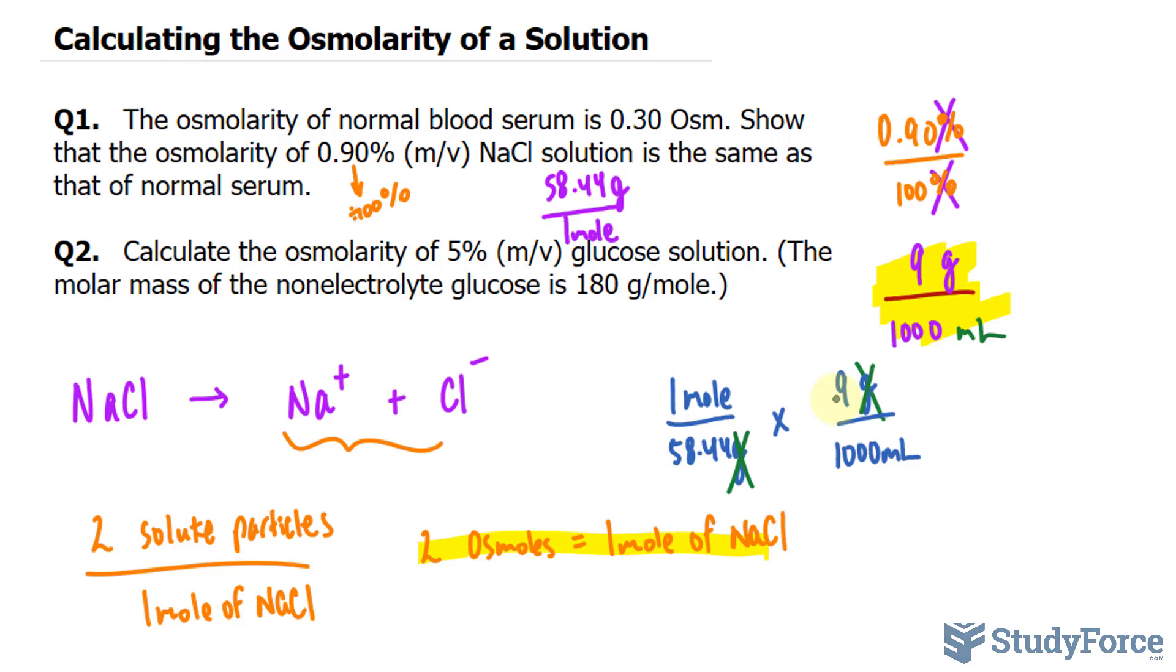Furthermore, if I multiply this statement by 2 osmoles per 1 mole of sodium chloride, this unit and this unit will cancel out. Because remember, that's 1 mole of sodium chloride, even though I didn't write it down. This leaves us with osmoles per milliliter.